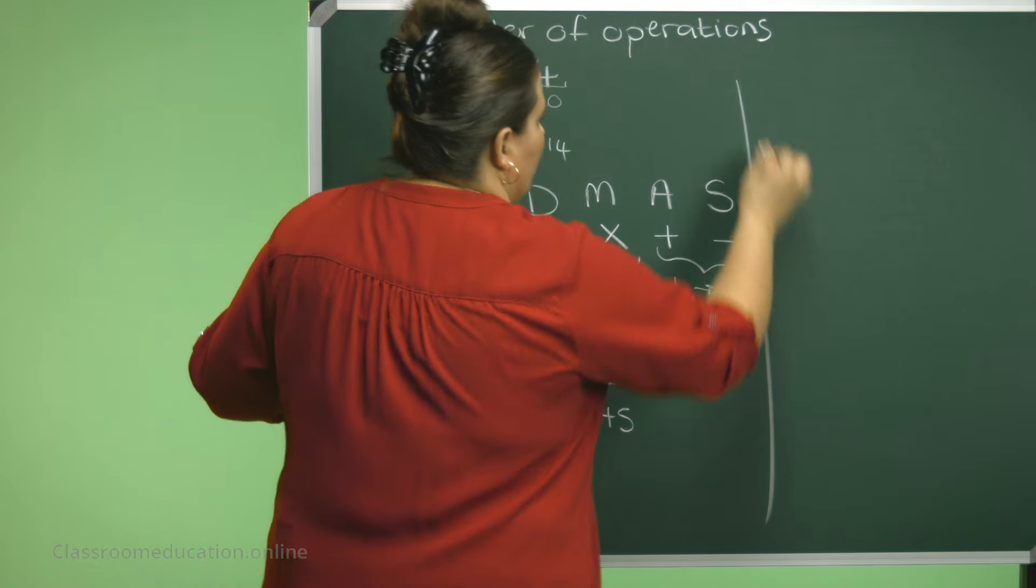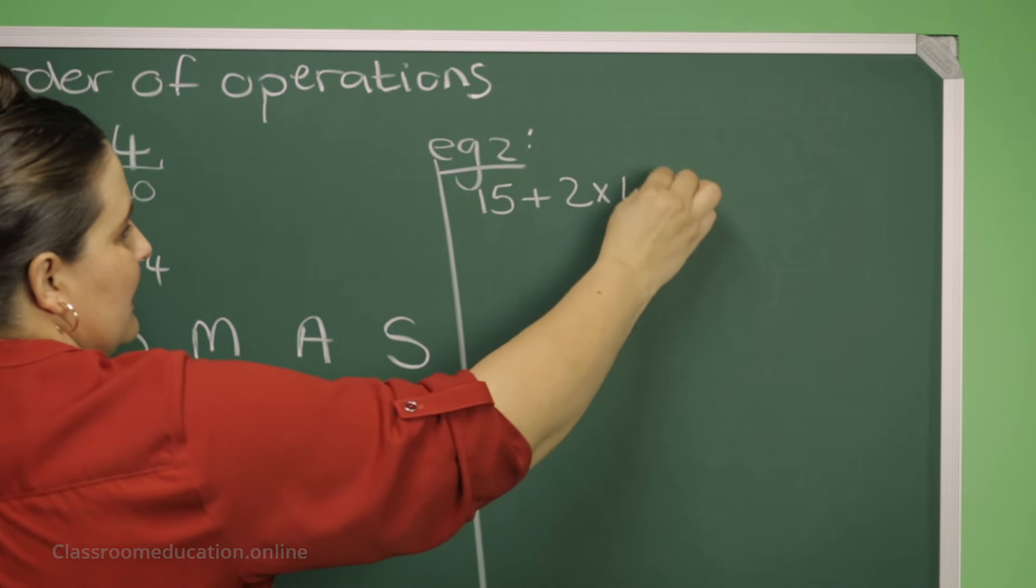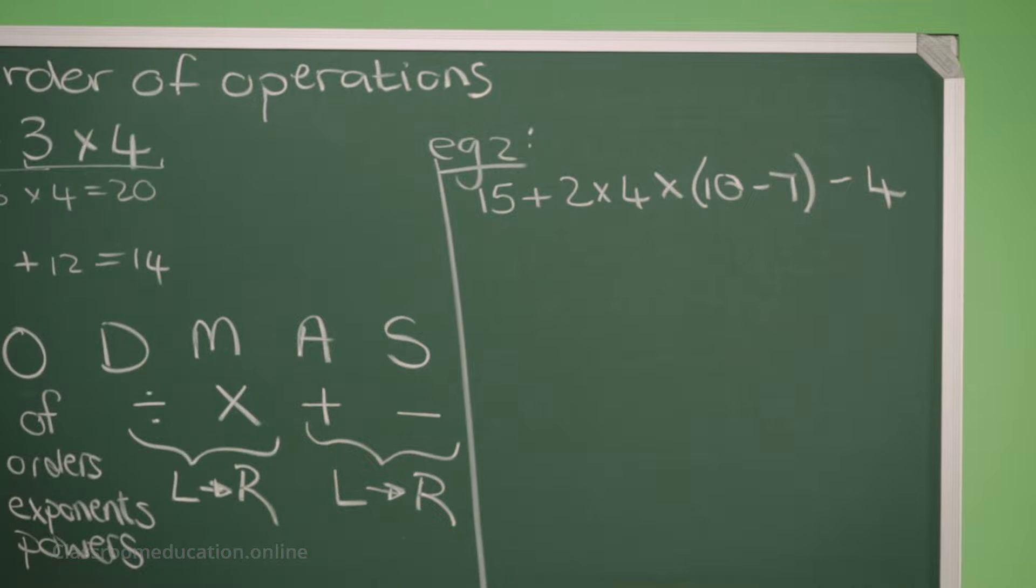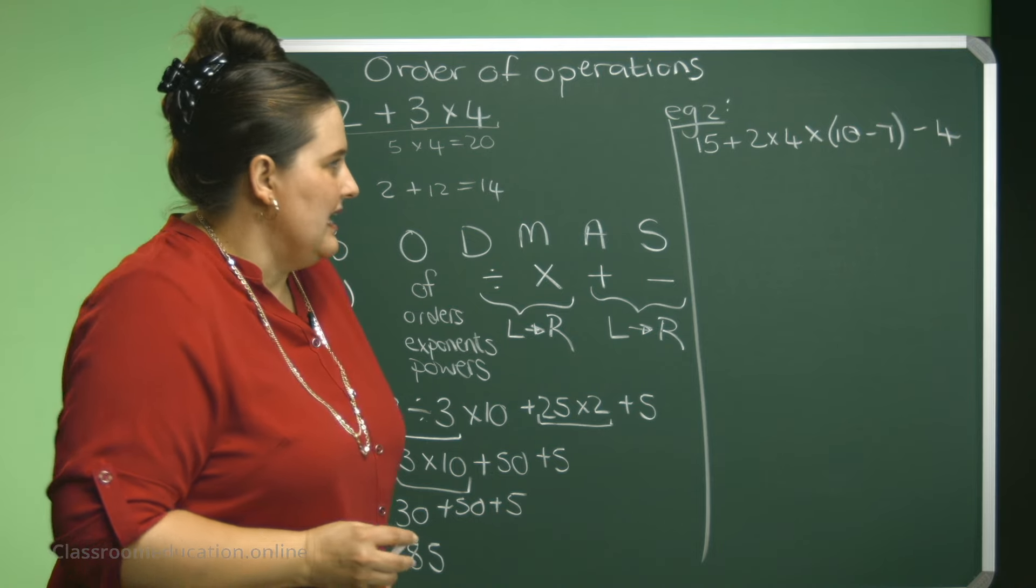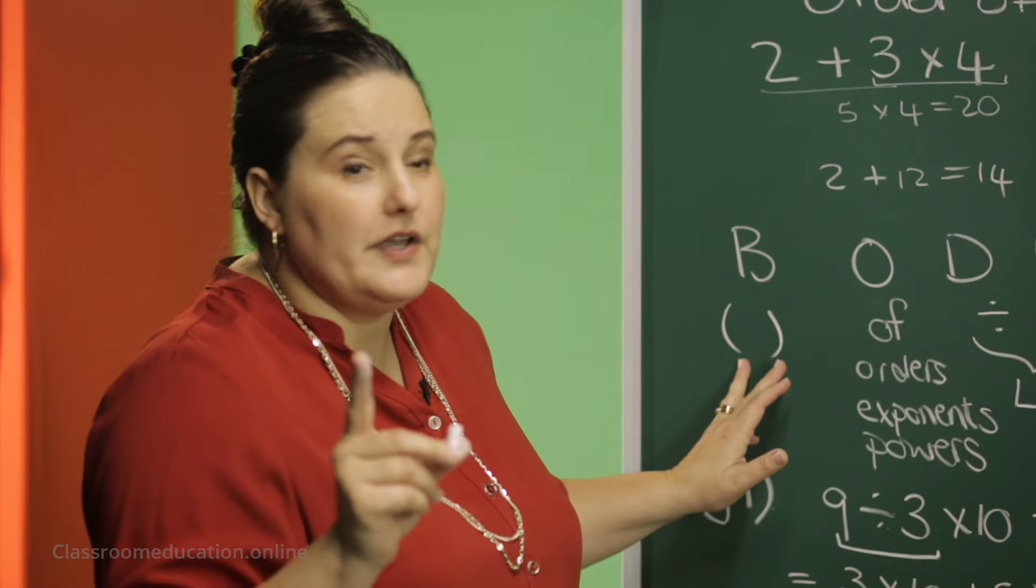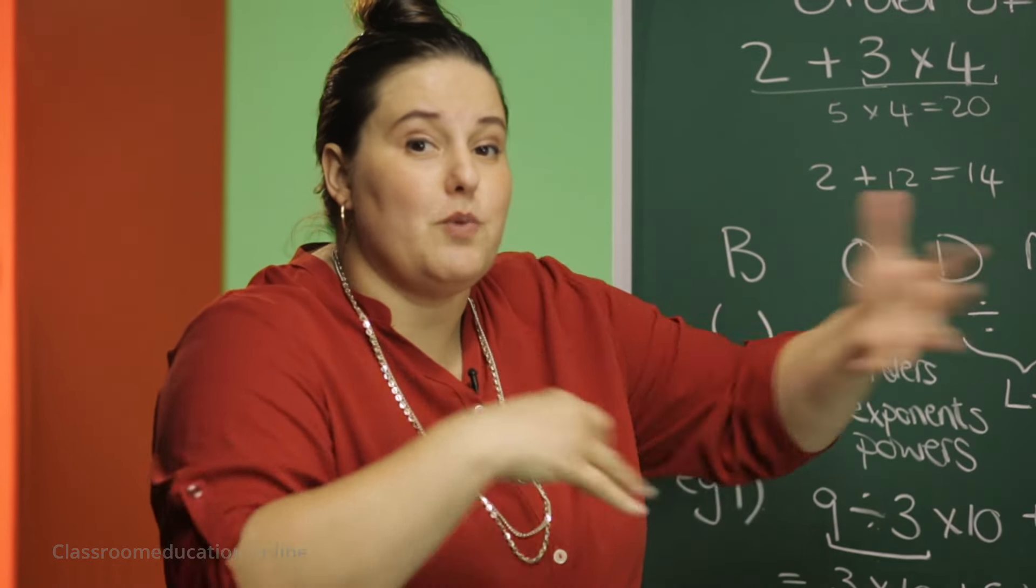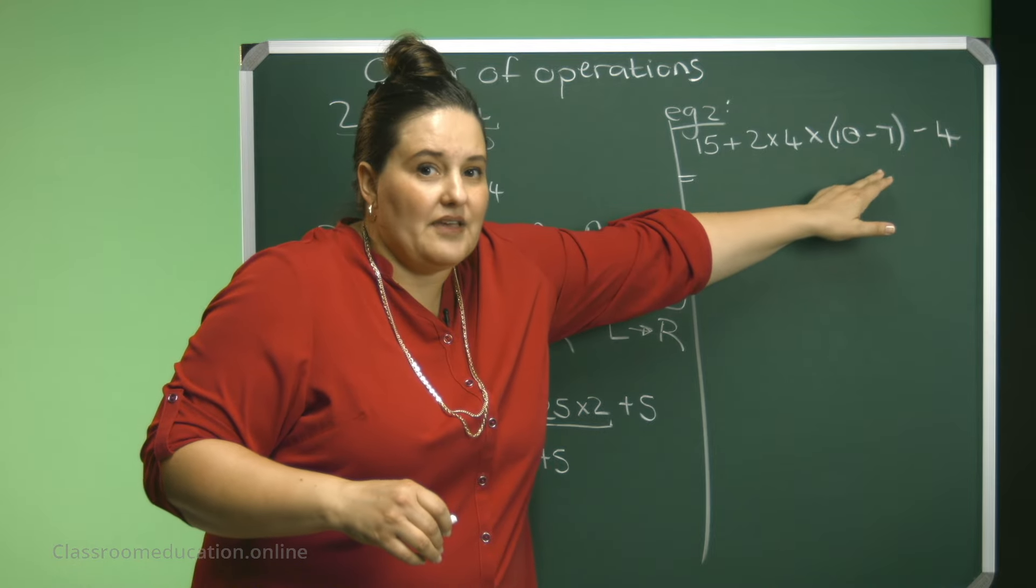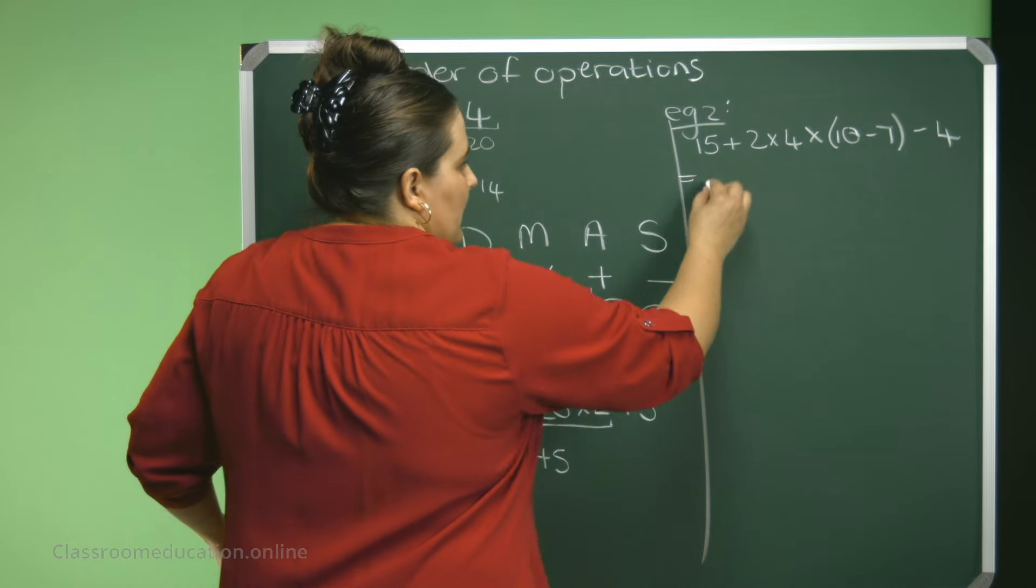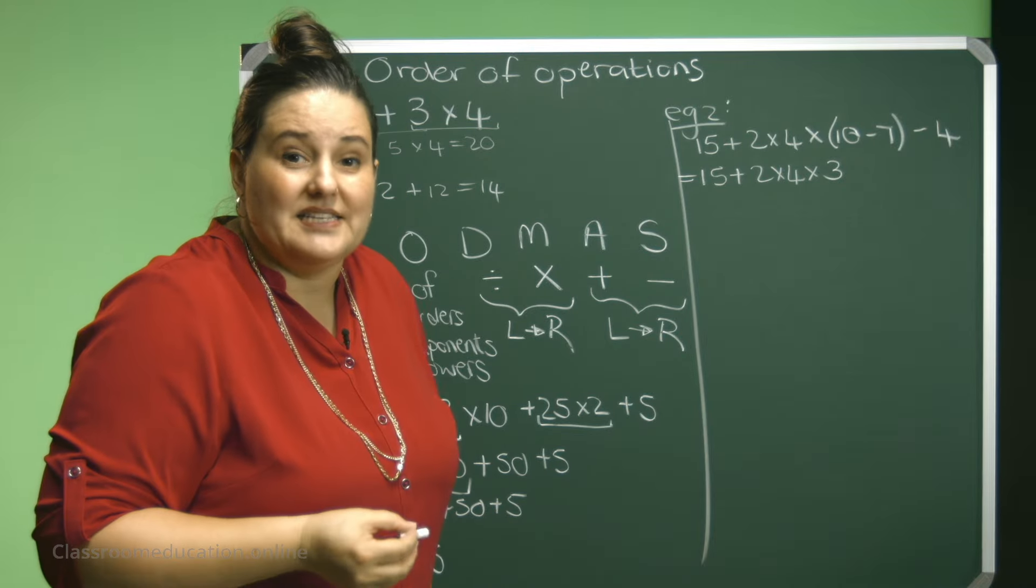Let's do another example to see whether you understand. Example 2. 15 plus 2 times 4 times 10 minus 7 minus 4. What should you do there? Let's see. We have brackets. So we need to do the brackets first. We are first going to see and to say 10 minus 7. So please, boys and girls, and very important, do not swap the order of your values. Do not write the 10 minus 7. That's a 3. Do not write it there first. Okay? You need to keep all these.